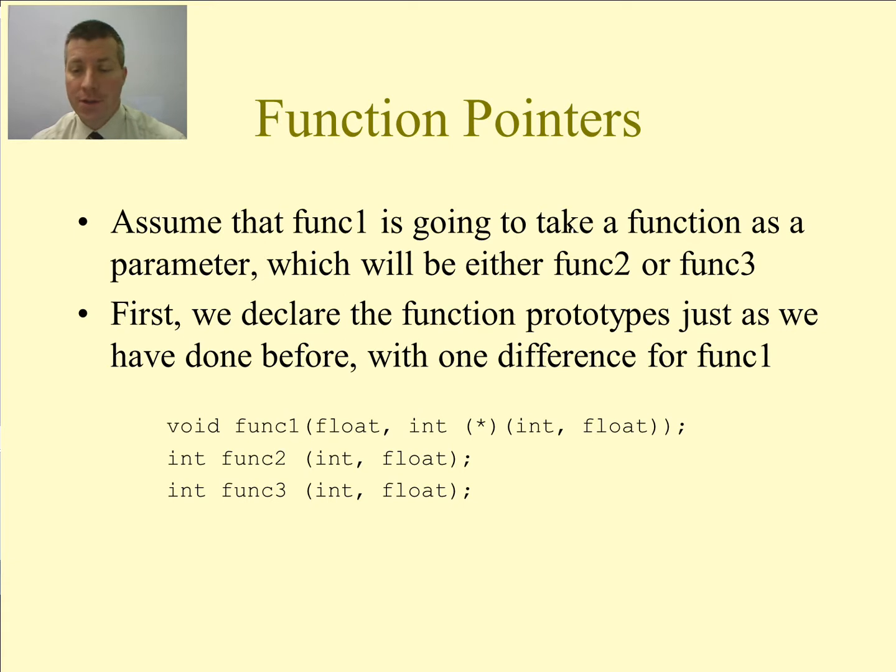Let's assume that we have a function called func1 and it's going to take a function as the second parameter to this function. Let's say that it's either going to be func2 or func3 that it takes as that second parameter. So when we write our function prototypes, we write them out exactly the same way as we've done before. You see that there's one difference. The second parameter of func1 is going to be a pointer to a function.